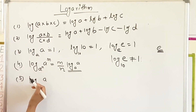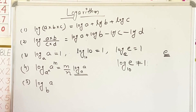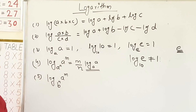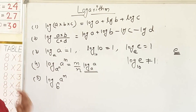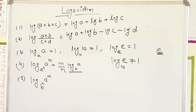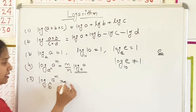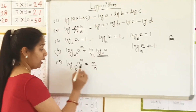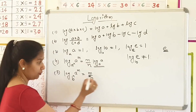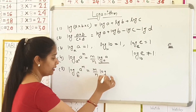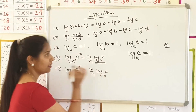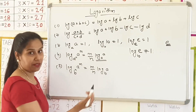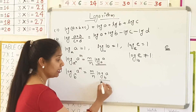If we have log A at the base B, and they have powers, then I have different powers. The answer is N over M — this is the same procedure. Now, if we have log A at the base B, then log A at base B follows the same procedure.